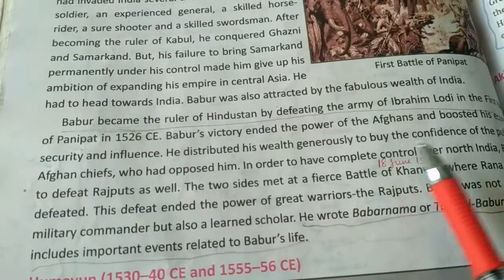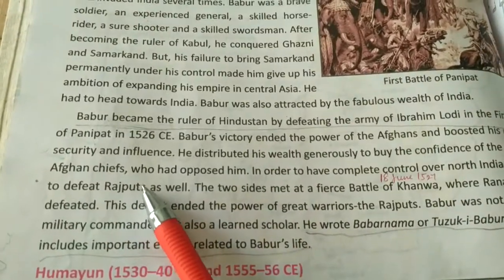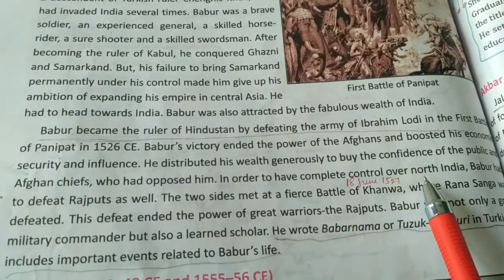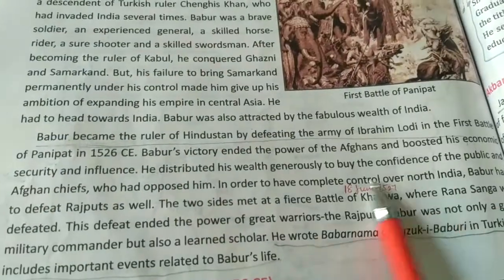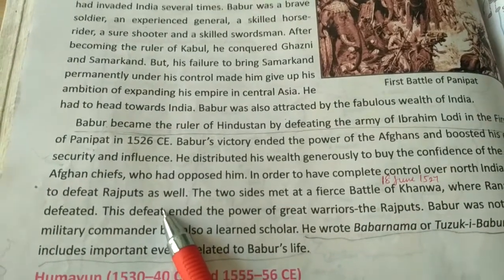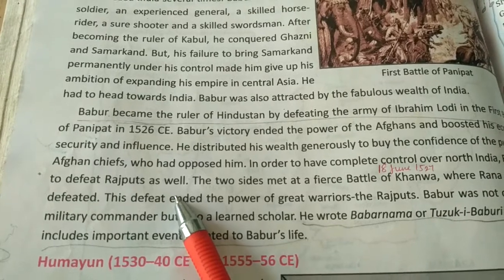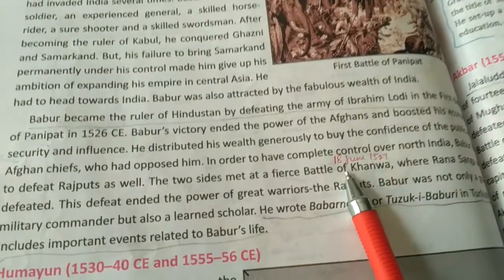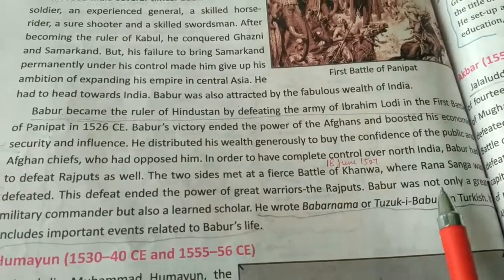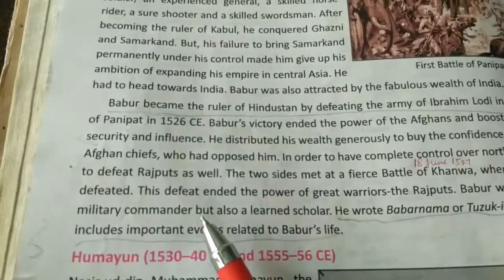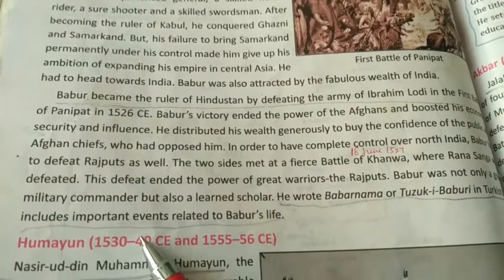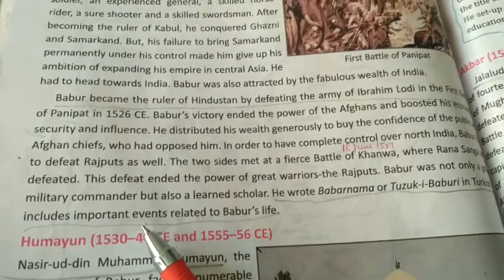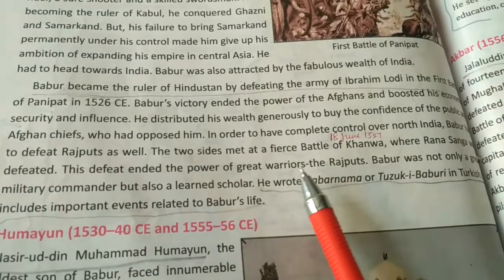Babur's victory ended the power of the Afghans. He distributed his wealth generously to win the confidence of the public and Afghan chiefs. To gain complete control over North India, Babur also had to defeat the Rajputs. The Battle of Khanwa took place on 18th June 1527, where Rana Sanga was defeated by Babur. This defeat ended the power of the great Rajput warriors.